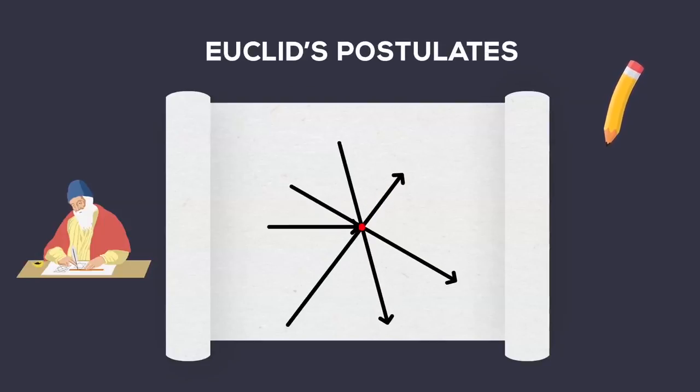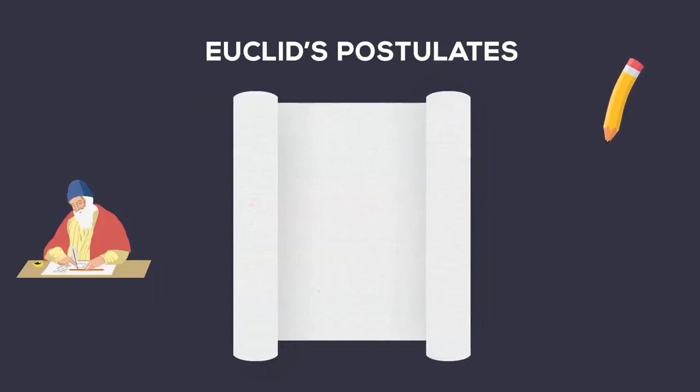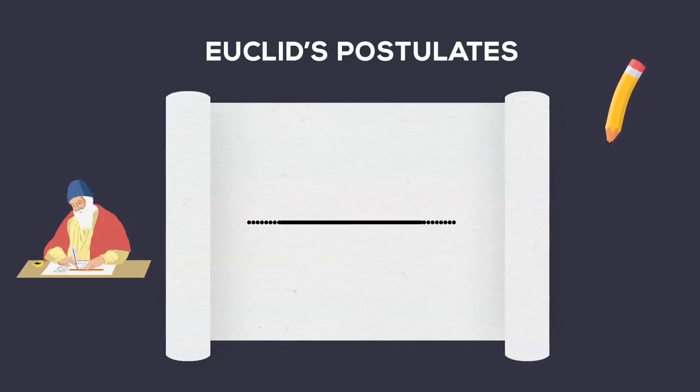Euclid's Postulates. 1. A straight line can be drawn from any point to any point. 2. A terminated line can be produced indefinitely.